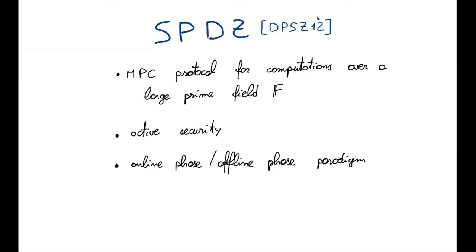Thanks to this paradigm, the complexity of the online phase is really low. The main type of correlated material generated in the offline phase is called a beaver triple or multiplication triple, and as the name suggests, these are needed to compute multiplications. Specifically, we need one multiplication triple per multiplication gate, so we need a lot of them, and usually the generation of these is rather expensive.